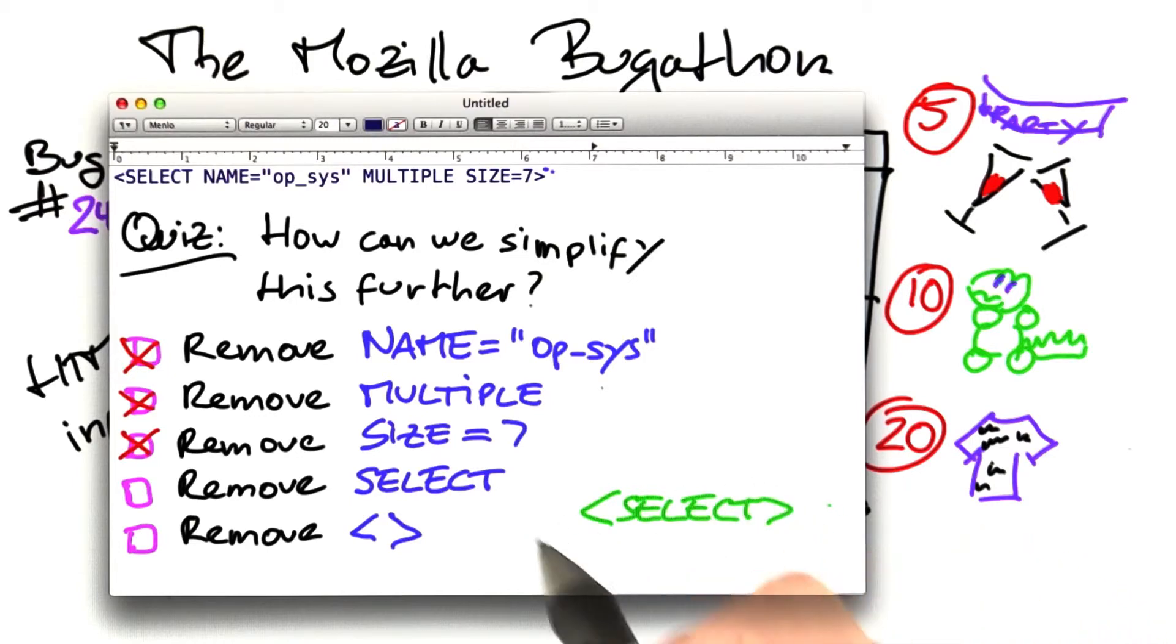So you see that in this big HTML input only eight characters are relevant for reproducing the problem, and this will certainly give us a nice reward from the Mozilla developers.